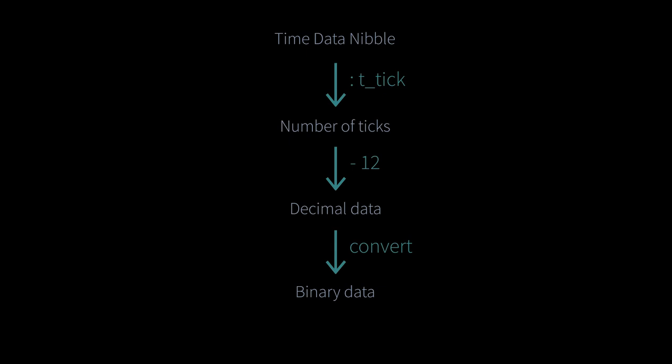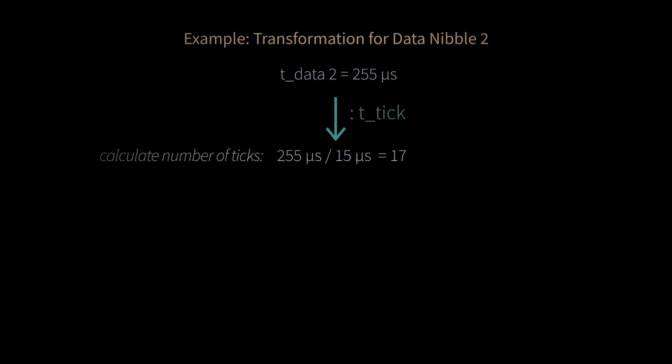Let's apply the same proceeding in another example. Data nibble 2 should now be encoded. For data 2 we measured the time 255 microseconds. If we divide this value by the time per tick of 15 microseconds which we previously calculated from the synchronization, we get 17 as the number of ticks for data nibble 2. Then we subtract 12 to move the offset to 0 and get 5 as the decimal value for data 2. This value of 5 is represented by 0101 in the binary system.